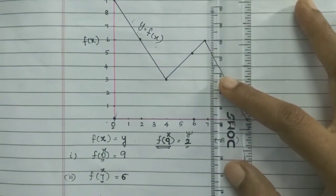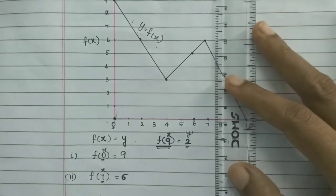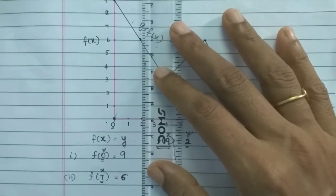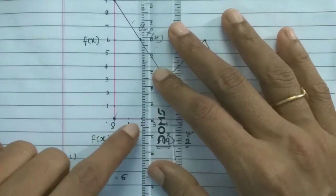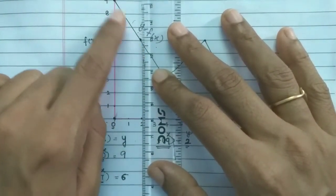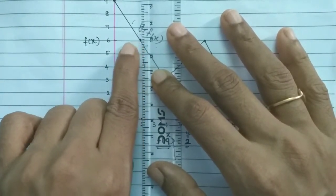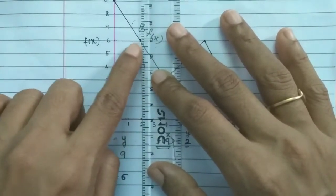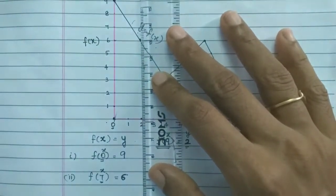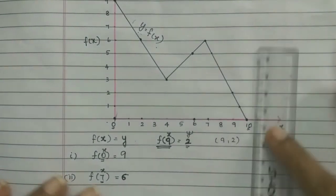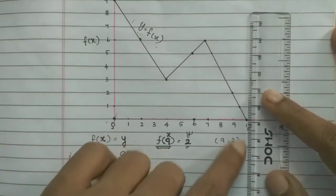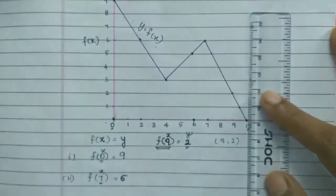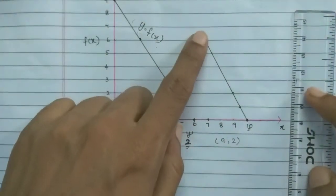Then f of 2: find the curve at x equals 2, the y-axis value is 1. So f of 2 is equal to 1. And for f of 10, find the curve at x equals 10, the y-axis value is equal to 0. So f of 10 is equal to 0.